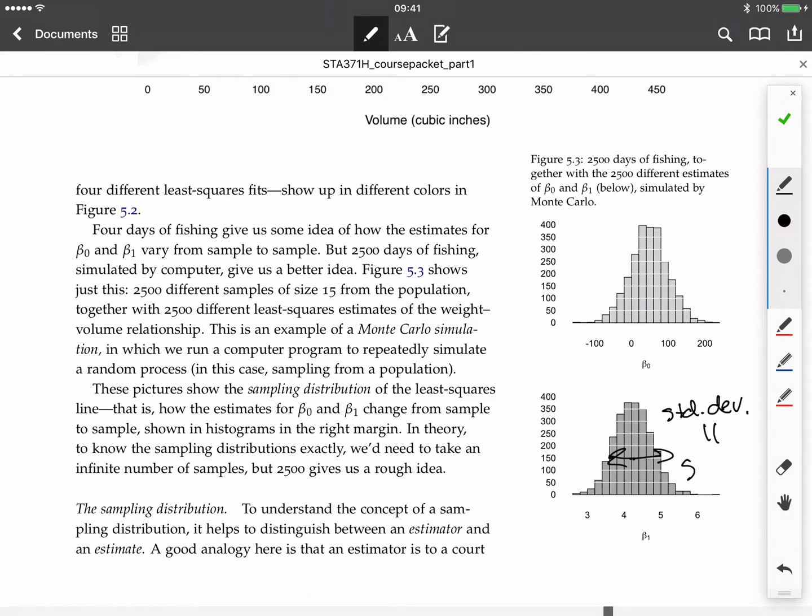It's the standard error. And in this case, this would be the standard error of the slope because we're talking about the sampling distribution of beta 1.